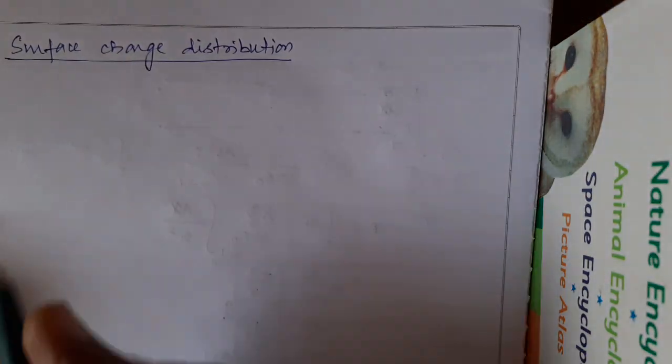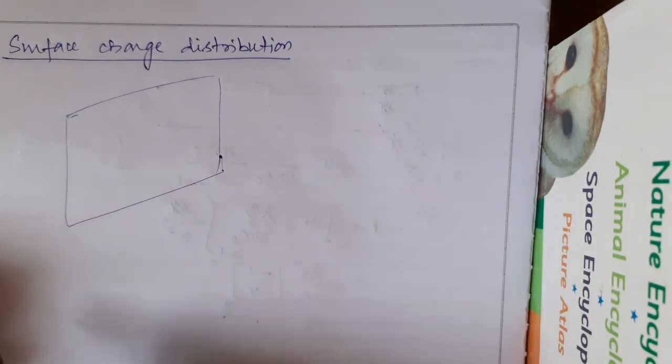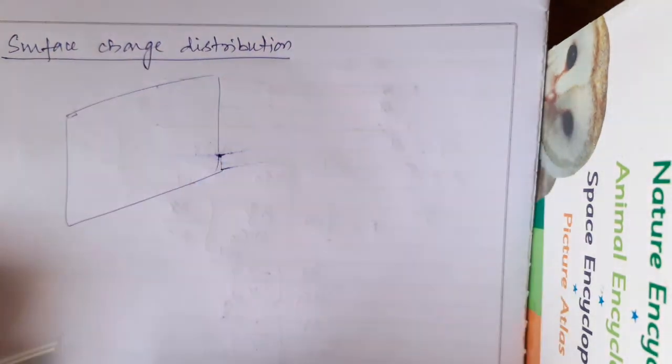Very simple case I will discuss here. There is a sheet given to you. Sheet means it is a two-dimensional thing.